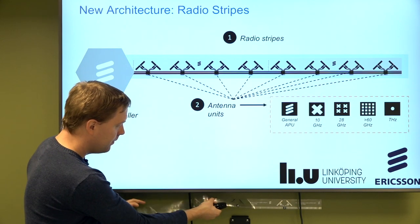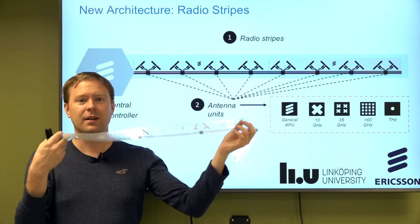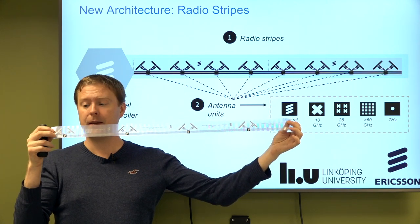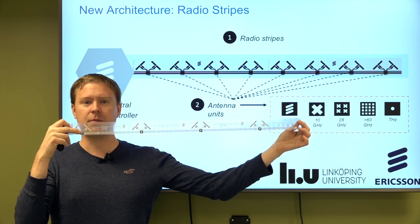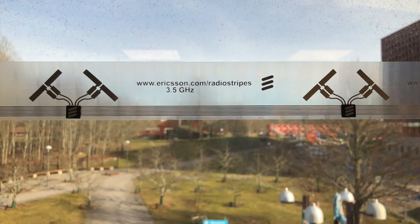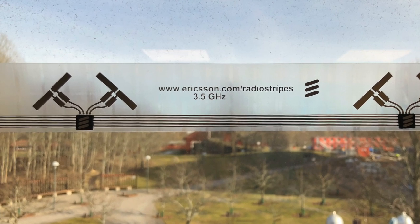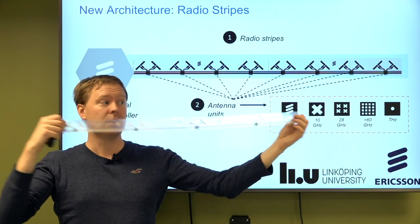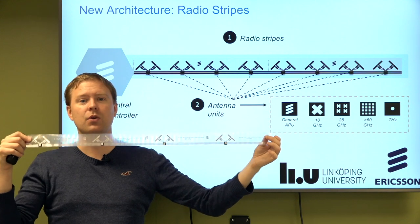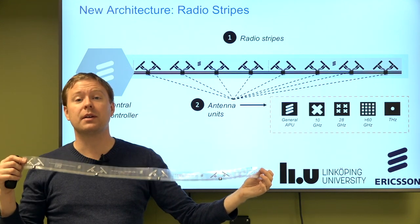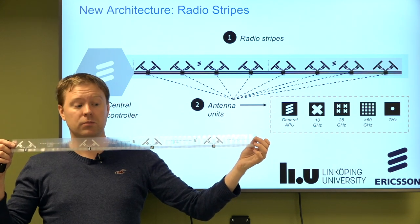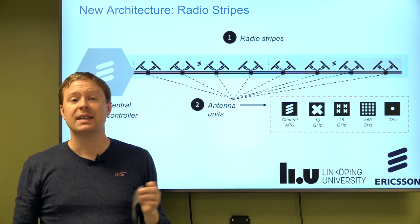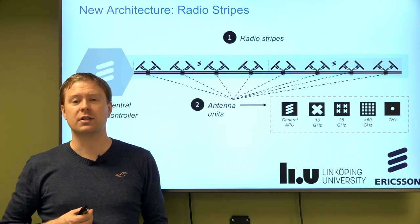Here is a printed electronics concept for radio stripes showing the cable, the antennas, and the black antenna processing units. While a central processing unit is still required, most baseband processing can be done in each local black antenna processing unit. You can put it on the wall, hide it behind wallpaper without losing much signal, and deploy it however you like. If you need a long one, buy a long one. If you need many, put up many — it becomes very scalable and cost-effective.